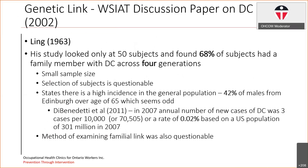Within the Ling paper itself, the study only looked at 50 subjects and found that 68% of them had a family member with Dupuytren's across four generations. So once again, it's a small sample size. The selection of the subjects is questionable. He states there's a high incidence in the general population — 42% of males from Edinburgh, Scotland, over the age of 65 had Dupuytren's, which seems really odd.